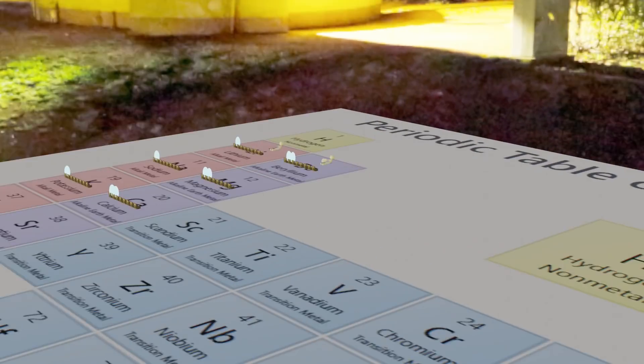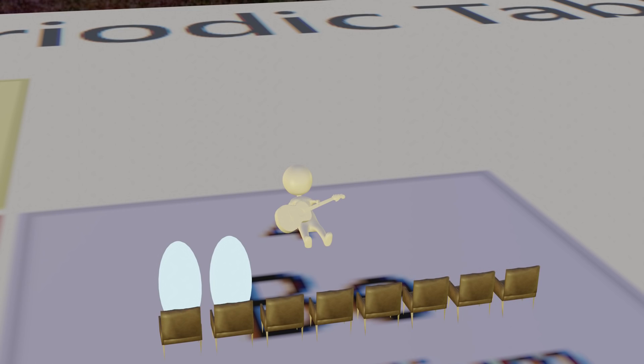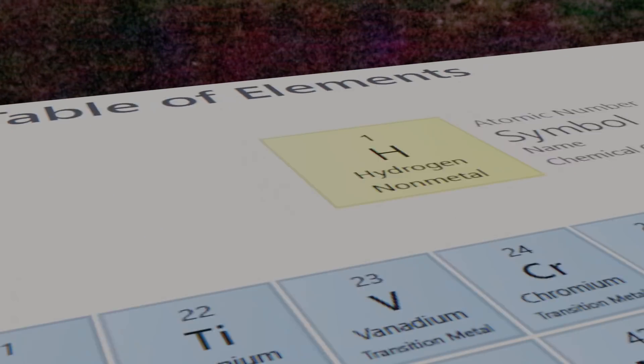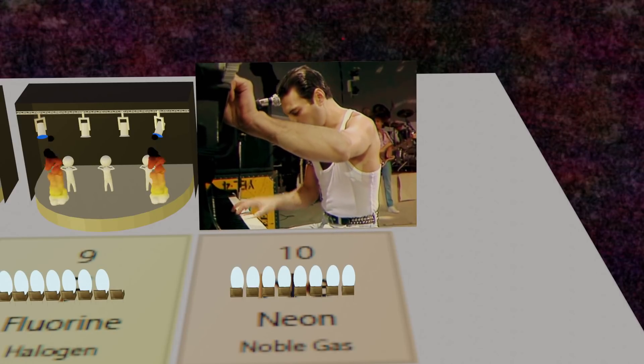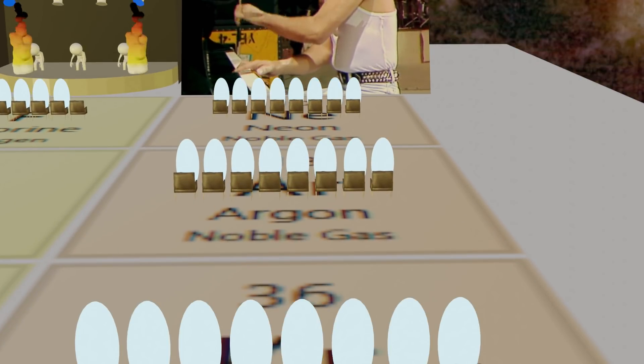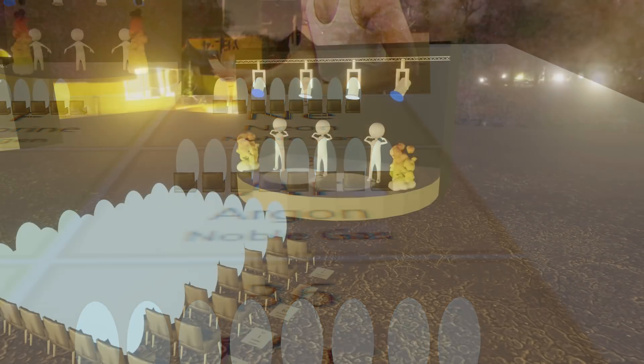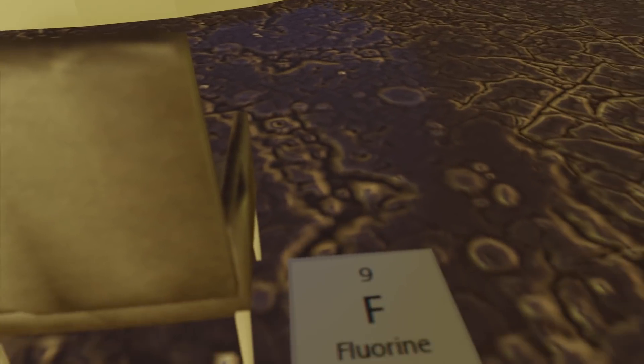Now all the way on the left here we have the alkaline metals. This is like a drunk transient singing in the subway, and this is like a drunk transient singing in the subway with a guitar. And all the way over here on the right we have the noble gases. This is like Queen at Live Aid, the concert of the decade. It's packed and all the seats are taken. Therefore obviously the best place for the best concert experience is front row and the last remaining seat at the second best concert, right here with fluorine.